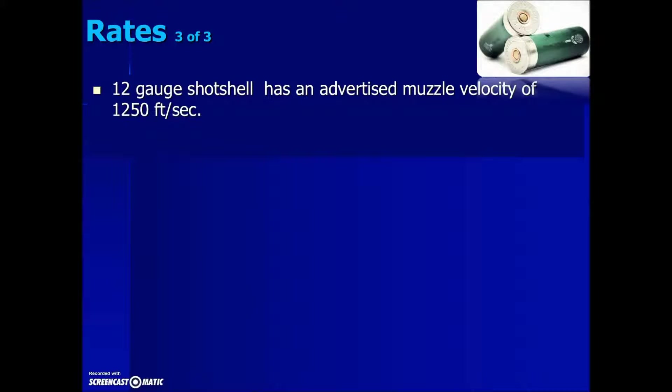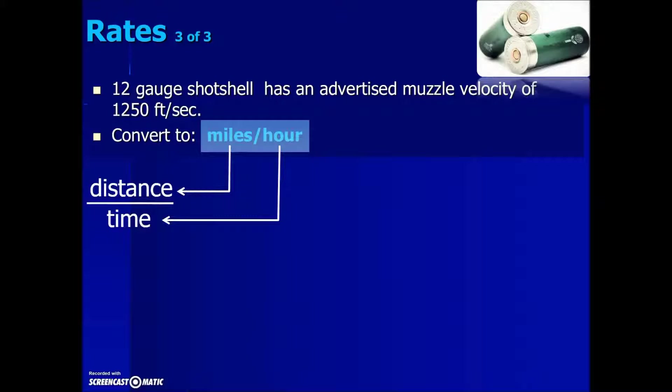Final example here we have 12 gauge shotgun shell has an advertised muzzle velocity of 1250 feet per second. Most of us don't have a frame of reference in feet per second, we're more familiar with miles per hour. So to have some sense of how fast this muzzle velocity is they're asking us to change feet per second into miles per hour. We'll set up our rate as miles generically is describing a distance per unit of time. Hours is a specific example of time. Putting in the information from the problem the distance traveled is 1250 feet per one second. So here's our given information expressed as a fraction with a denominator of one the implied one second.